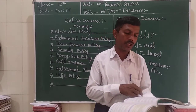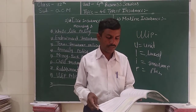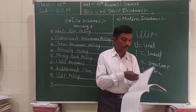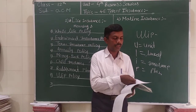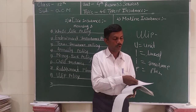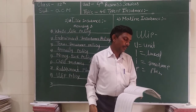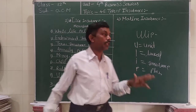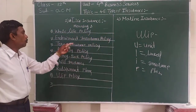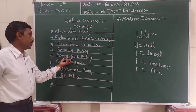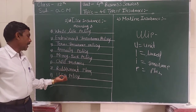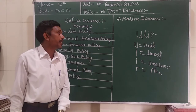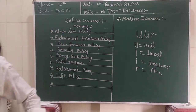Today we covered life insurance policy types. Tomorrow we will see marine insurance, which includes: workplace policy, time policy, mix policy, value policy, blanket policy, part fix policy, composite policy, and signal vision policy. Today we covered: whole life policy, endowment insurance policy, term insurance policy, annuity policy, money back policy, child insurance, retirement plan, and ULIP policy. Thank you so much. See you tomorrow.